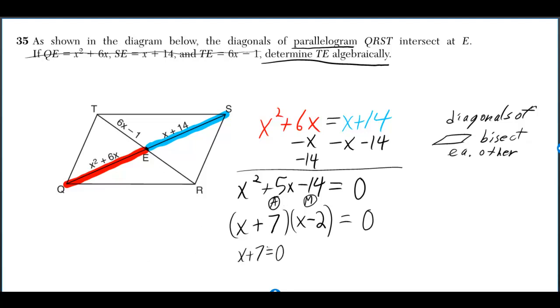Now the first thing has to equal 0, or the second thing is equal to 0. So X is equal to negative 7, or X is equal to 2.